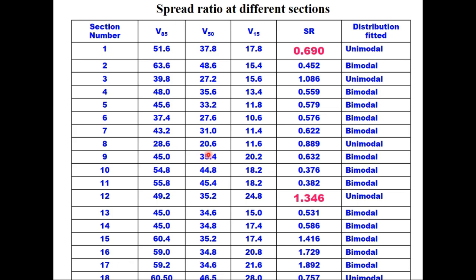This table shows spread ratio at different sections as estimated from field data. Generally speed data follows normal distribution when this spread ratio is between 0.69 and 1.346, otherwise it will follow a bimodal distribution. So friends I have demonstrated a unique method of analyzing speed data. Thank you very much for watching this video. You can post your questions in the comment box.